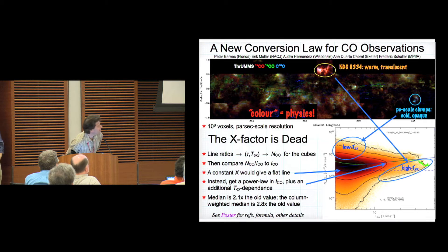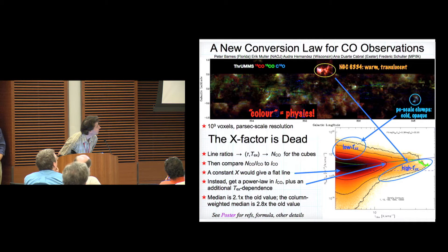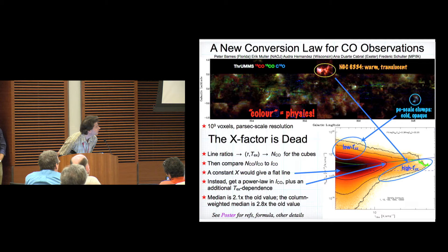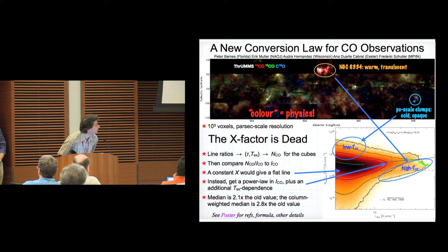This is a busy slide showing results from several different surveys using CO isotopologues throughout a large part of the Milky Way, among other things to look at line ratios and establish a new conversion from CO intensity to total column density or H2 column density. The bottom line is we've got a new way of doing this. It's all based on THRUMMS, CHAMP, and SEDIGISM data, which is mostly published now. Come by and I'll be happy to explain it.